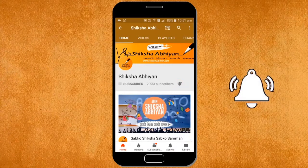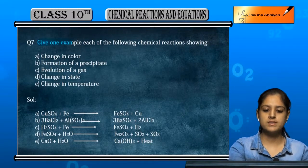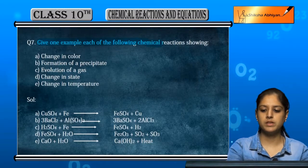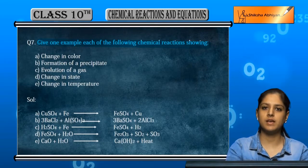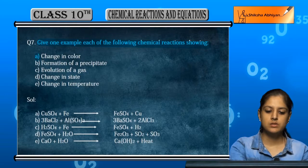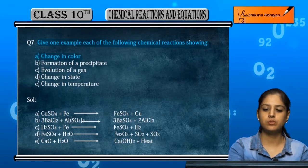Question number 7: Give one example each of the following chemical reactions showing changes. The characteristics of the reaction examples.